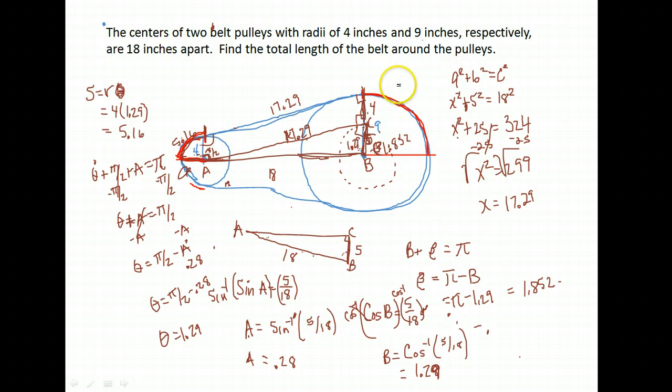To find the arc length here, I'm going to take my radius of my circle times my angle β. My radius is 9, and the β I just found was 1.852. If I multiply those, I will have my arc length. So we take 9 times 1.852, and we get about 16.668.